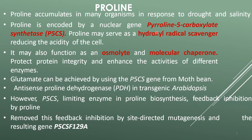Proline accumulates in many organisms in response to drought and salinity. Proline is encoded by the nuclear gene pyrroline-5-carboxylate synthetase, represented as P5CS. Proline may serve as a hydroxyl radical scavenger, reducing the acidity of the cell. It may also function as an osmolite and molecular chaperone.